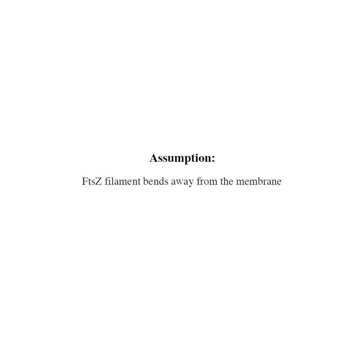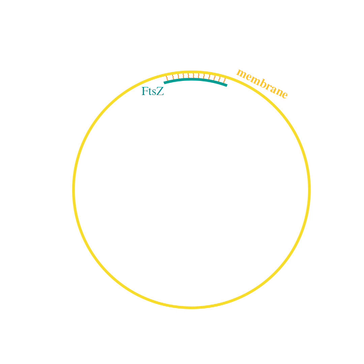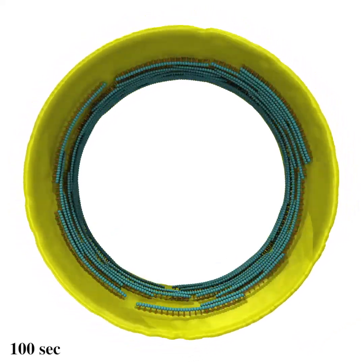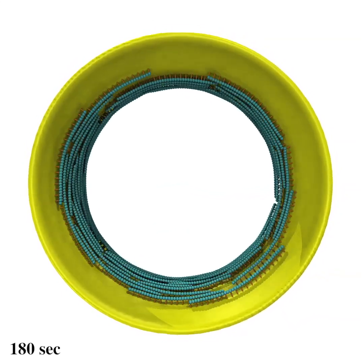We realized that this problem can be solved by reversing the bending direction of FtsZ. Since the filament bends away from the membrane, the difference in curvature can be significant. Simulating this model shows that a small curvature of FtsZ is sufficient to cause membrane constriction.